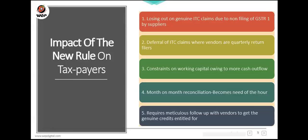Impact of the new rule on the taxpayer: first, losing out on genuine ITC claims due to non-filing of GSTR 1 by suppliers — so you must ensure not only that you file on time, but also that your suppliers file on time. Second, deferral of ITC claims where vendors are quarterly filers. Third, constraints on working capital due to increased cash outflow. Fourth, month-on-month reconciliation becomes critical to avoid losing ITC. Fifth, continuous follow-up with vendors for genuine credit is required — if a supplier has not uploaded an invoice as part of GSTR 1, you need to follow up to ensure they do.